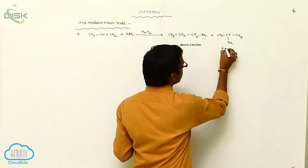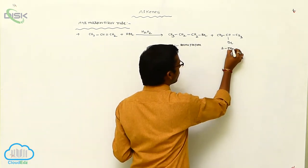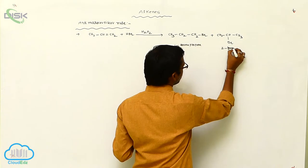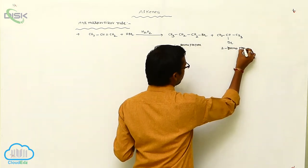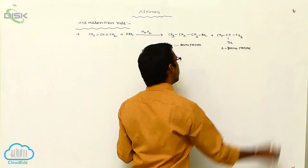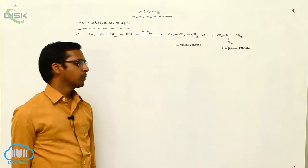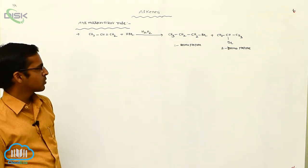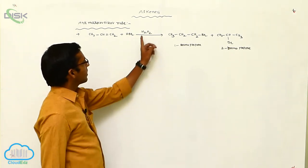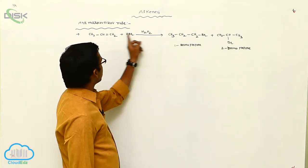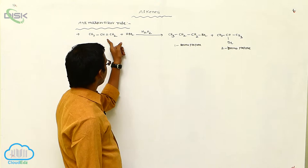The first product is 1-Bromopropane and the second is 2-Bromopropane. Both are positional isomers of each other, so both products exist. With hydrogen peroxide present, the alkene — in this case propene — undergoes this reaction.